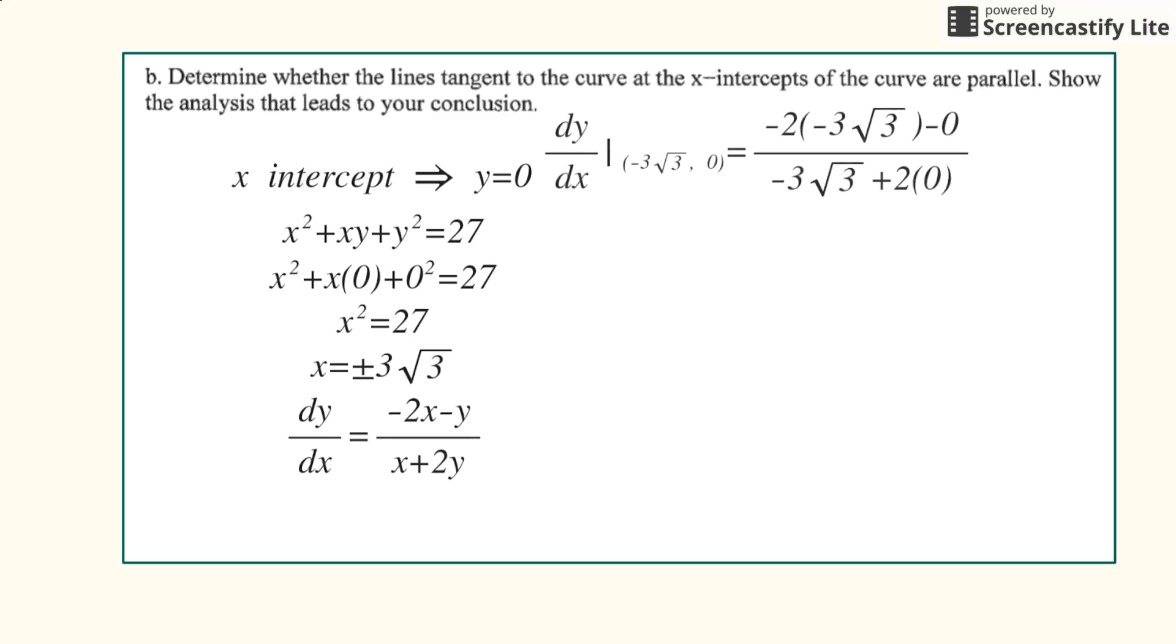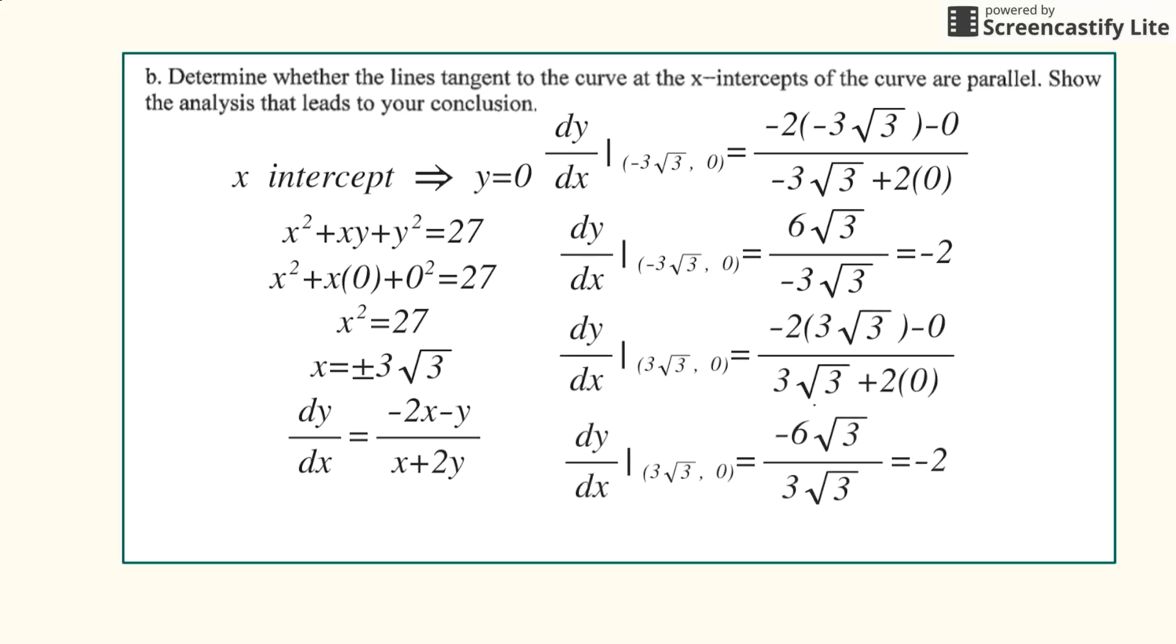Then we take the derivative that we just found and plug in negative 3 radical 3 comma 0 and get negative 2. Then we plug in 3 radical 3 comma 0 and also get negative 2. Since those two values are the same, they are in fact parallel.